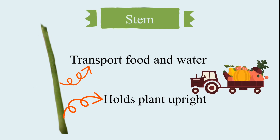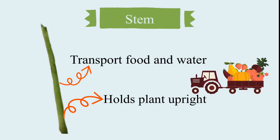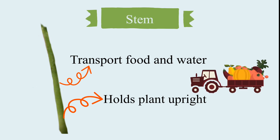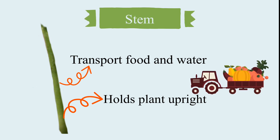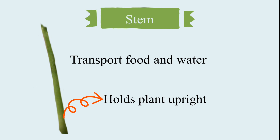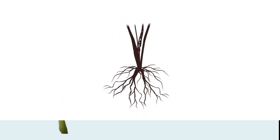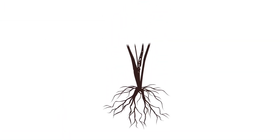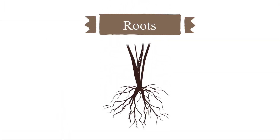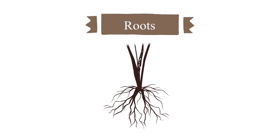The stem holds the plant upright, just like a pillar that supports the plant. The stem also transports food and water to different parts of the plant.